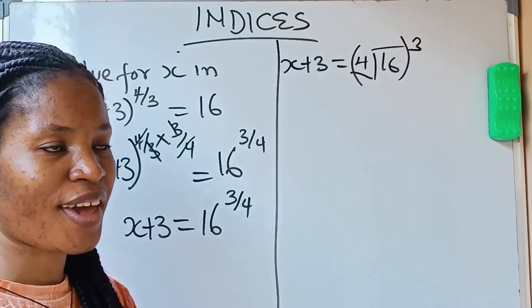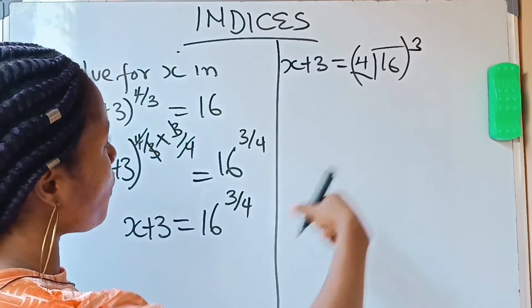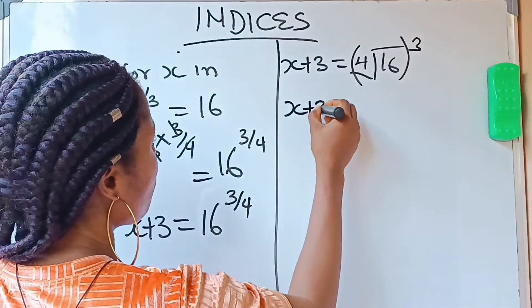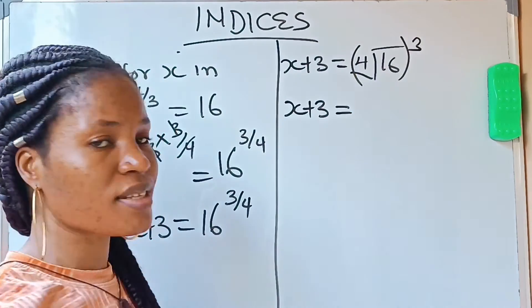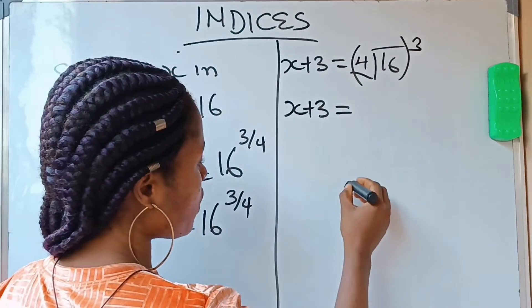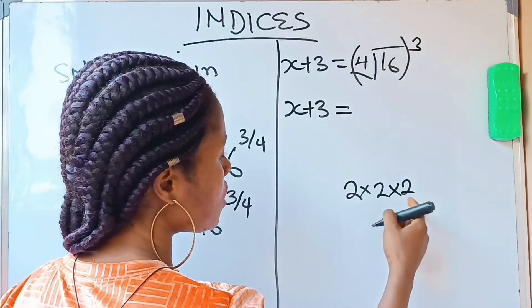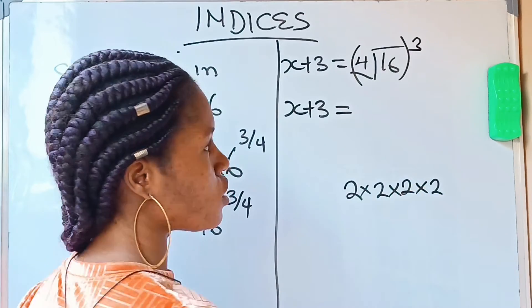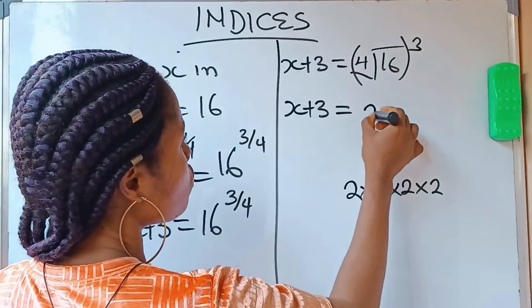All right, let us continue. We have x+3 equals the fourth root of 16. What will you multiply 4 times to get 16? The answer is 2. When you say 2 times 2 is 4, 4 times 2 is 8, 8 times 2 is 16. So fourth root of 16 is 2.